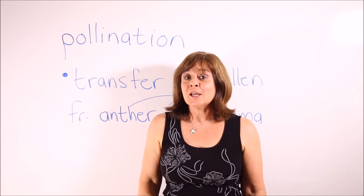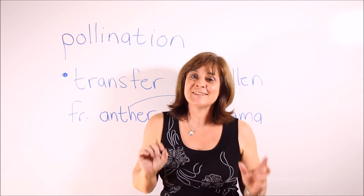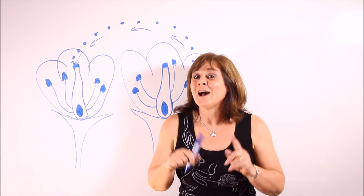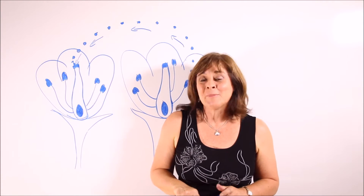Pollination takes place when pollen is transferred from the anther to the stigma. Here is a picture of a lily in which you can clearly see the anthers and the stigma. This beautiful purple lily has six purple anthers and one blackish-grey stigma. Stigmas provide landing places for pollen and an entry point into the pistil, where fertilization occurs.